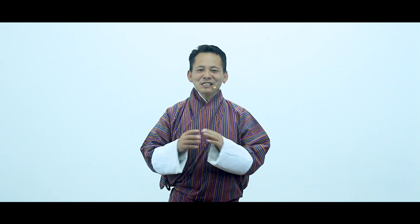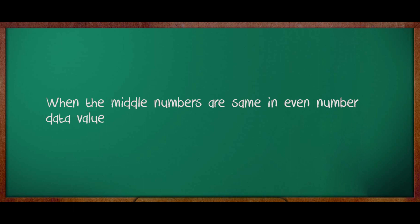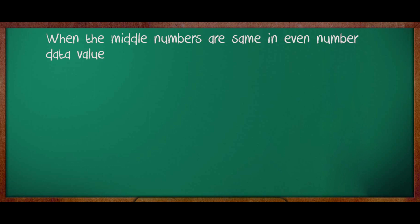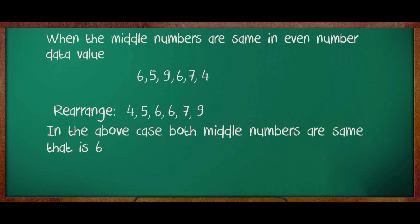Now, dear children, let us try to find out median when the middle numbers are the same in even number data values. The data set values are 6, 5, 9, 6, 7, 4. When we arrange in ascending order, the data values we get are 4, 5, 6, 6, 7, 9. Since both middle numbers are the same — that is 6 — so, 6 is the median of the set of data given above.